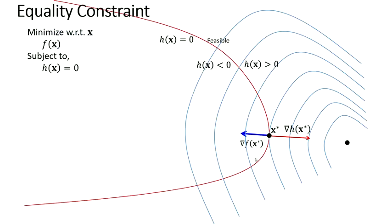Now let's go to an equality constraint. We want to minimize f of x subject to h of x equals zero — a single equality constraint. This red curve represents h of x equals zero, so only this red curve is feasible. Everything outside — either side of this red curve — is infeasible. Let's assume that on one side h of x is less than zero, and on the other side h of x is greater than zero.